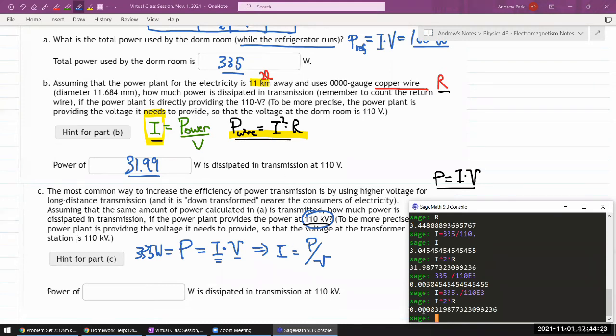It's minus 1, 2, 3, 4, 5. 3.2 times 10 to the minus 5 Watt.